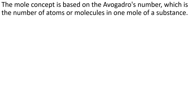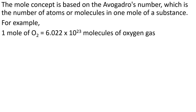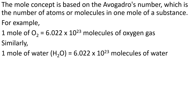The mole concept is based on Avogadro's number, which is the number of atoms or molecules in 1 mole of a substance, as we saw in the figure. Let's understand with the help of examples. Suppose we have 1 mole of oxygen — 1 mole of O₂ will be equal to 6.022 × 10²³ molecules of oxygen gas. Similarly, 1 mole of water will be equal to the same number of molecules of water. The entity is changing — first we have oxygen and second we have water — but the number of molecules in 1 mole of oxygen or water are the same, which is Avogadro's number.